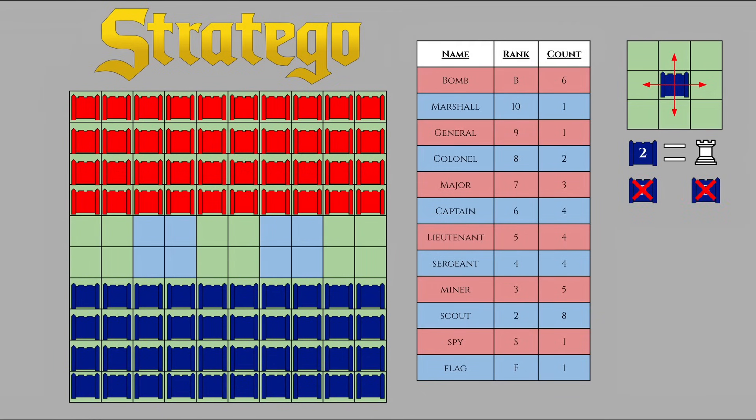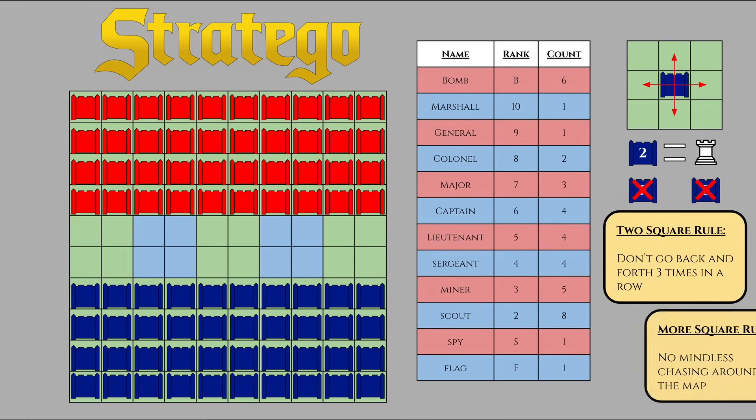Players cannot move their pieces into allied pieces, nor can they move a piece into the lakes or over the lakes in case of the scout. To stop degenerate gameplay, Stratego has what is called the two-square rule, where no piece can move back and forth between the same two squares for three turns in a row. In addition, they also have what is called the more-square rule, where a piece cannot endlessly chase an opposing piece it can't ever attack. This tends to prevent circular goose chases around the lake when there are like four pieces left.